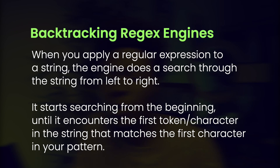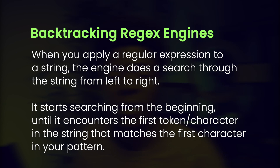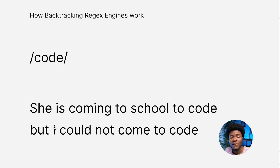Here is what happens when executing regular expressions with backtracking regex engines. When you apply a regular expression to a string, the engine does a search through the string from left to right. It starts searching from the beginning until it encounters the first character in the string that matches the first character in your pattern. Let's say you have a pattern like 'code' using the literal notation, and we have a string like 'she is coming to school to code, but I could not come to code'.